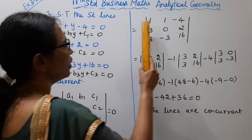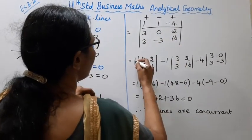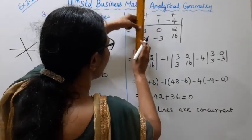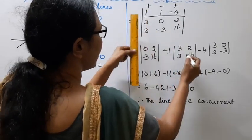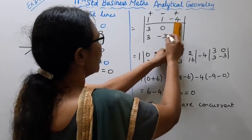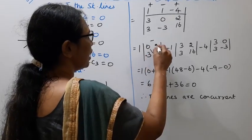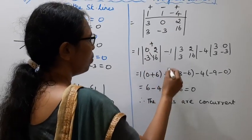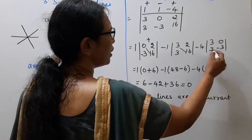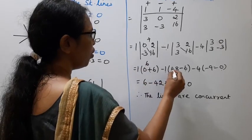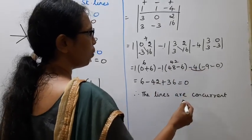Now substituting the values: expanding the determinant with the given coefficients — using 1, 3, 16 and 3, minus 3 — computing: one into sixteen minus zero, minus three into two minus six, plus one into minus three into zero. We get: 48 minus 6, minus 42, and six minus four giving forty-eight minus six equal to forty-two, then minus forty-two.